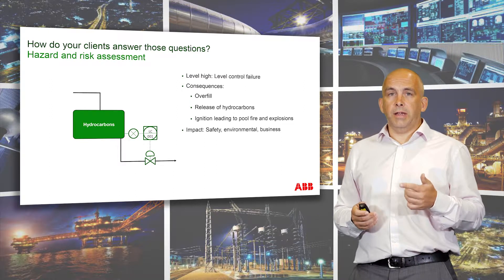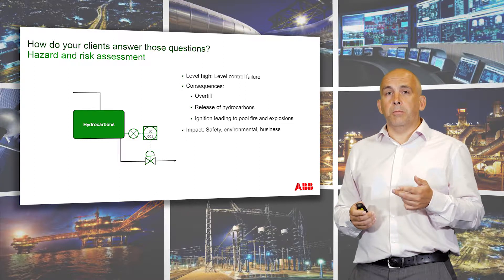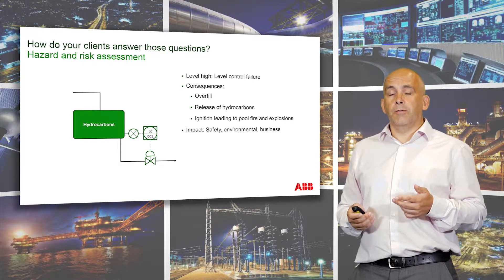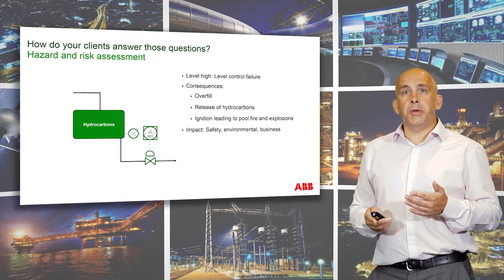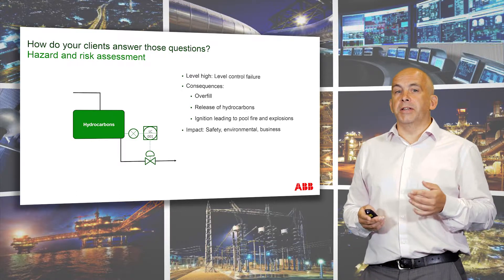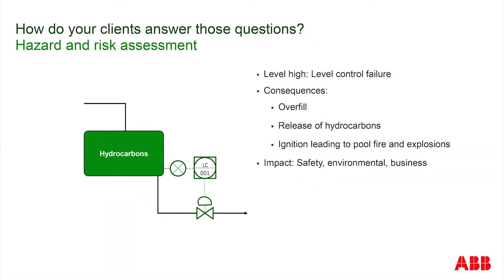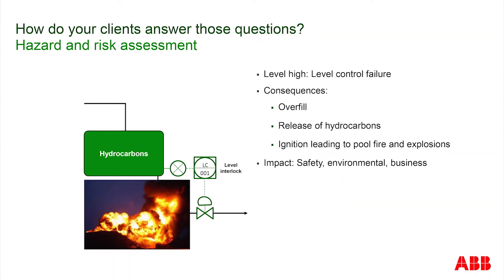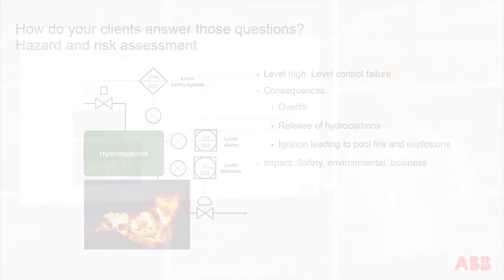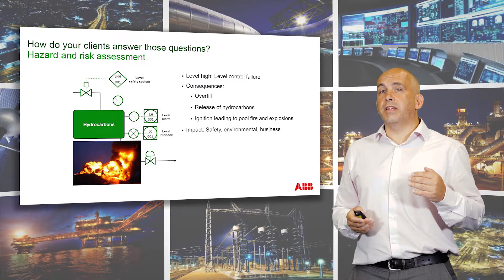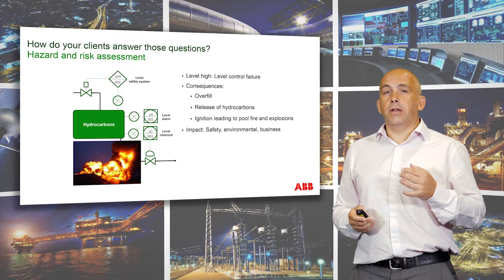That would have safety, environmental and probably financial impacts from that particular event. So obviously we don't want that to happen. We put in place barriers to prevent that. One such barrier could be a level interlock. Another barrier could be a high level alarm — when the level gets high in that vessel, the alarm sounds in the control room. And finally, we have a safety instrumented function: when the level gets ultra high, it closes the feed into that vessel so the level can't get any higher.